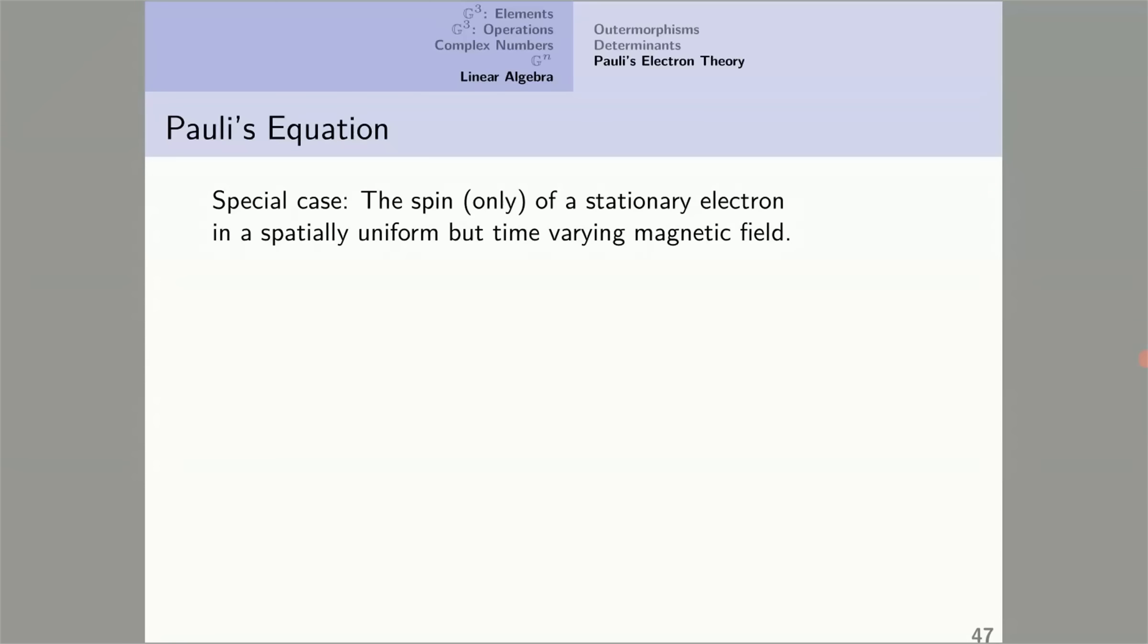Pauli's equation. I'll discuss only a special case here: the spin only of a stationary electron in a spatially uniform but time-varying magnetic field. Now the equation applies not just to electrons, but to other subatomic objects, and in particular to some nuclei. In this situation, it's used to describe magnetic resonance imaging. So this is an important equation in medicine.